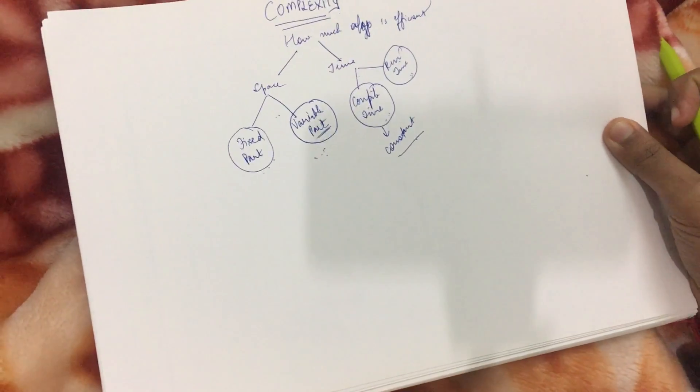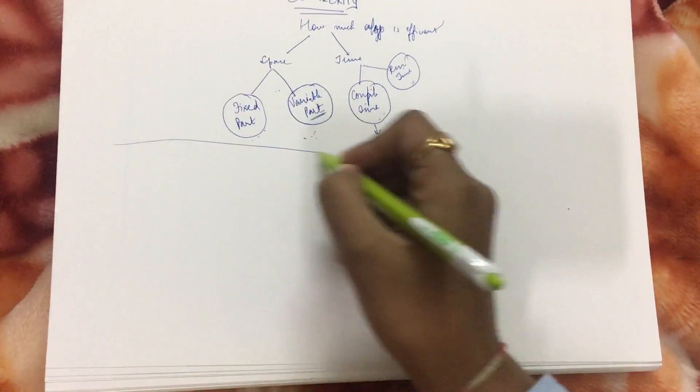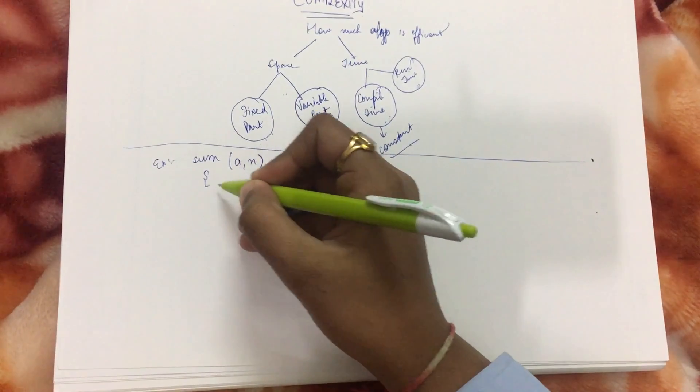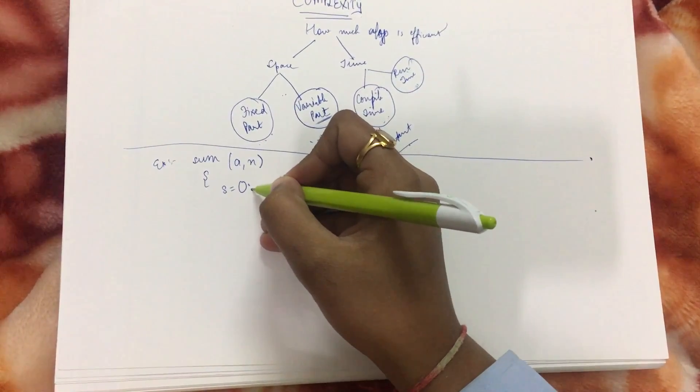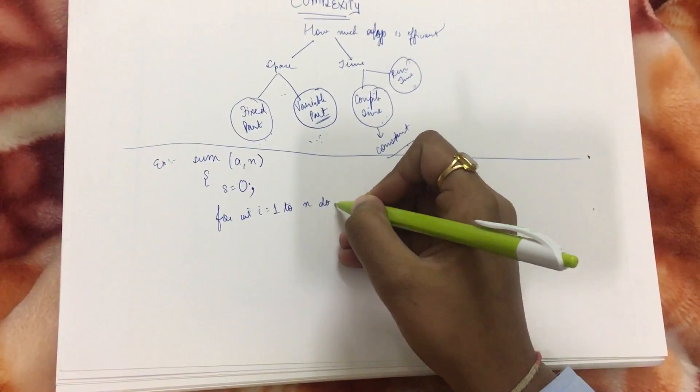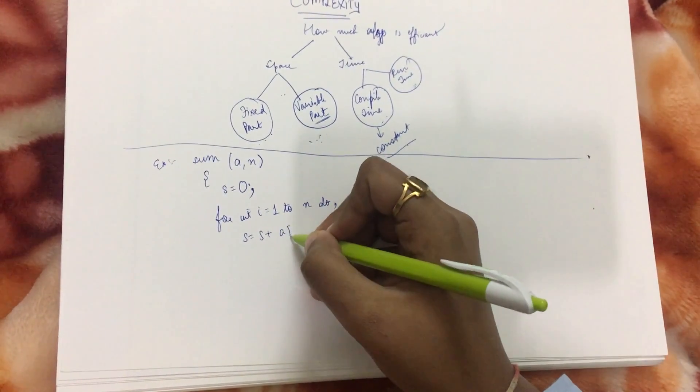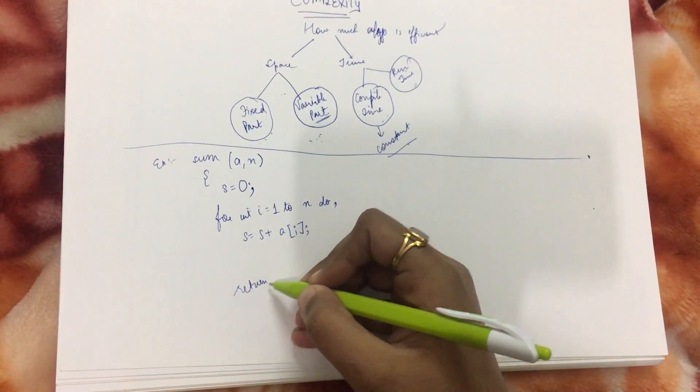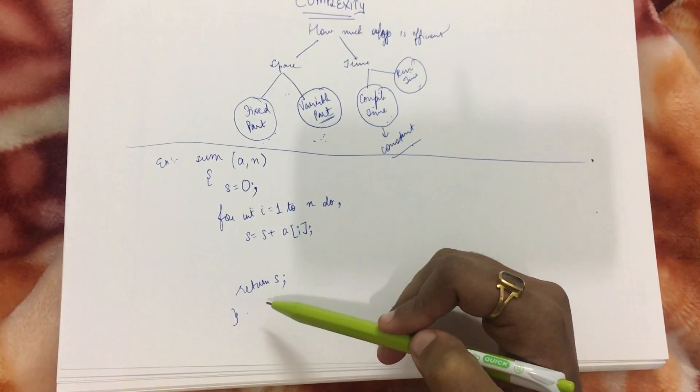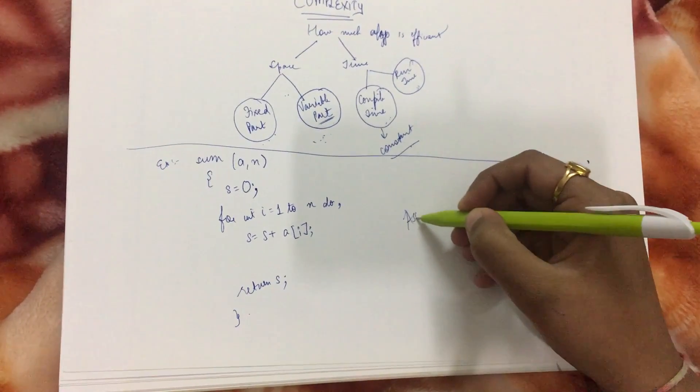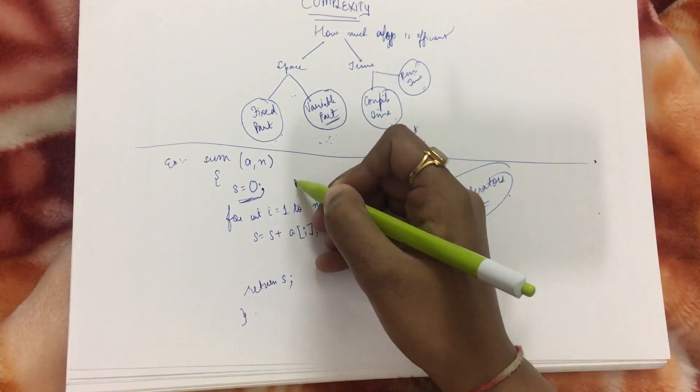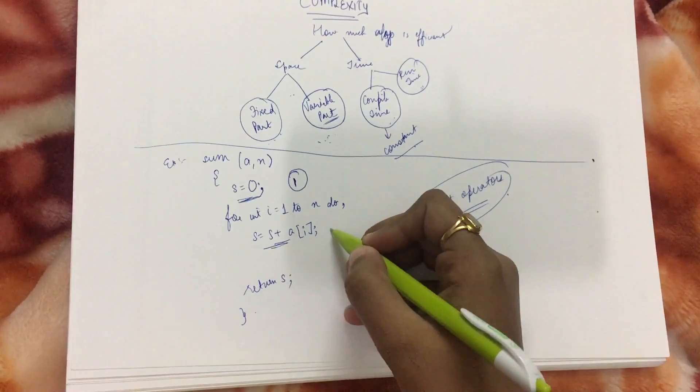Now we will see a method that we use to find out the space complexity. Suppose I have this example: sum(a, n). I initialize s as 0, then for i equals 1 to n, do s plus a[i]. In the end, return s and stop. To find the space complexity, I find the space complexity for the assignment operators. I see 1 here, then 1 here.